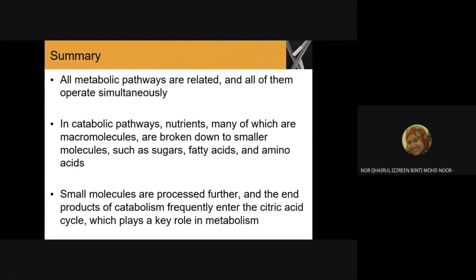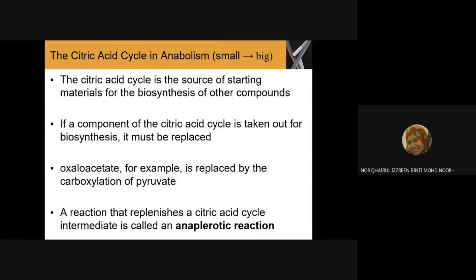To summarize: all metabolic pathways are related and operate simultaneously. In catabolic pathways, nutrients — many of which are macromolecules — are broken down to smaller molecules such as sugars, fatty acids, and amino acids. These small molecules are processed further, and the end products of catabolism frequently enter the citric acid cycle, which plays a key role in metabolism. For TCA cycle in anabolism — from small molecules to bigger molecules — the citric acid cycle is the source of starting material for biosynthesis of other molecules. If a component of the TCA cycle is taken up for biosynthesis, it must be replaced; for example, oxaloacetate is replaced by the carboxylation of pyruvate. A reaction that replenishes TCA cycle intermediates is called an anaplerotic reaction.